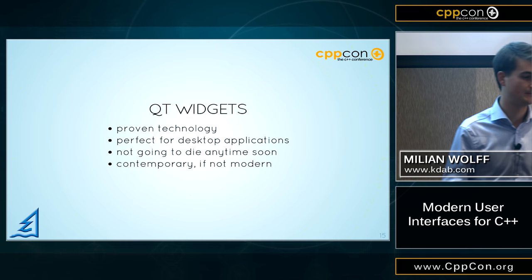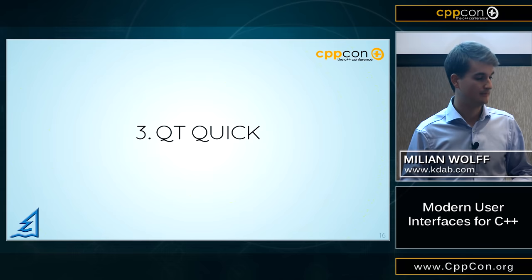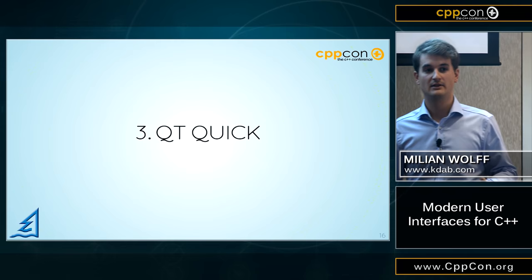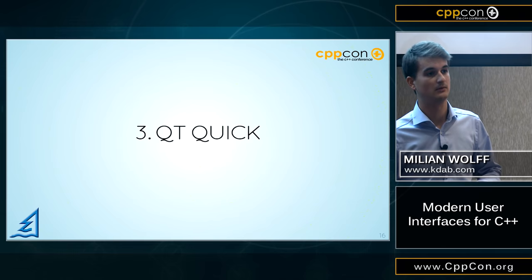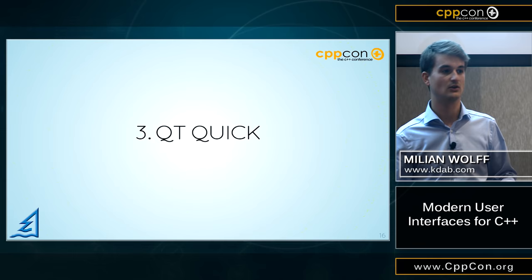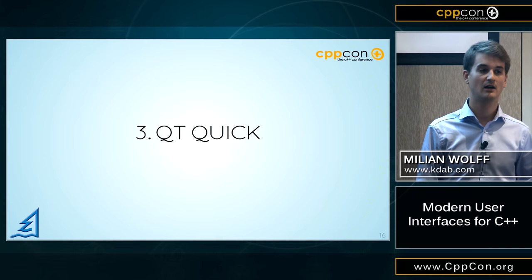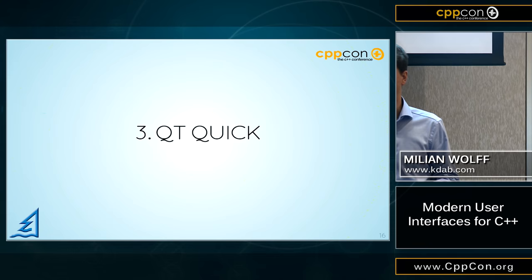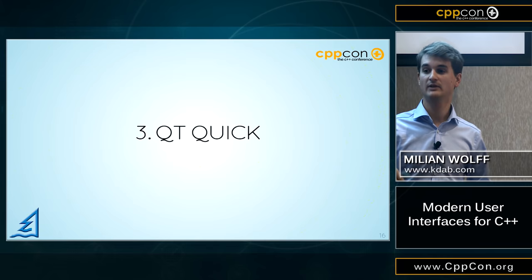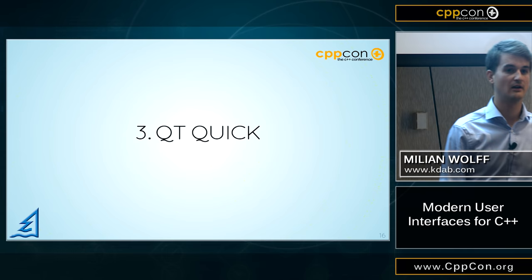Now let's get to Qt Quick. Qt Widgets has been around for a long time, and over the process of working on that, the Qt people realized there are some problems you cannot easily solve with the existing API. The biggest problem is getting something that is hardware-accelerated. Qt Widgets uses your CPU, your SIMD structures, to make it as fast as possible, but it won't actually use your graphics card to offload stuff. It's super inefficient and hard to get fluid, animated interfaces with the Widgets API.